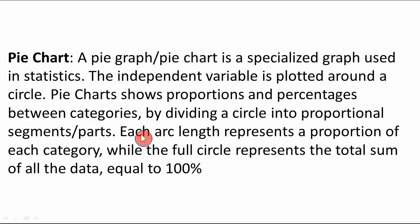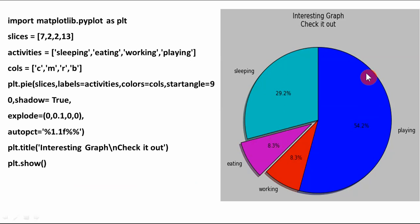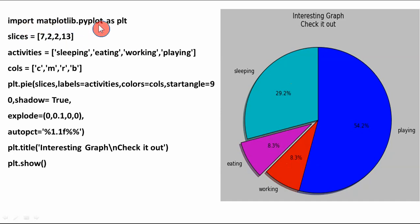In the pie chart, the whole circle is segmented into various arcs, and each arc length represents a proportion of each category, while the full circle represents the total sum equal to 100%. You can see the full circle is 100% and there are various values of the variable. The first statement imports matplotlib.pyplot as plt. The variable slices contains four values: 7, 2, 2, and 13.